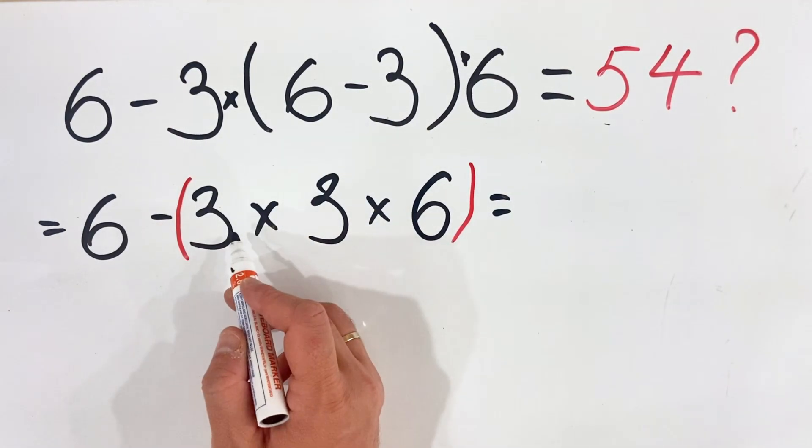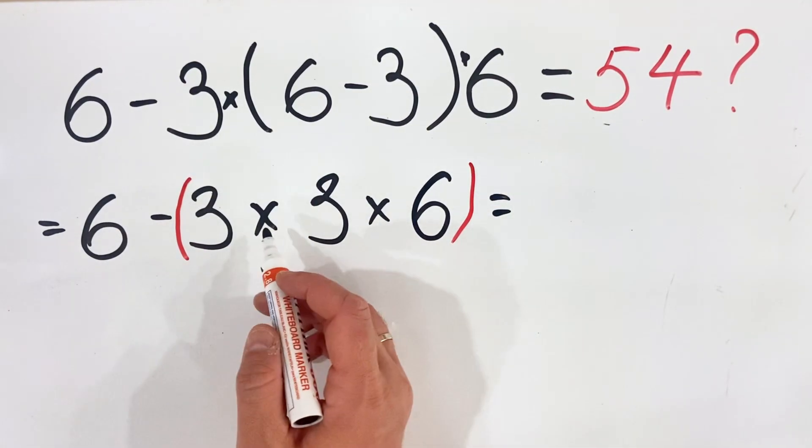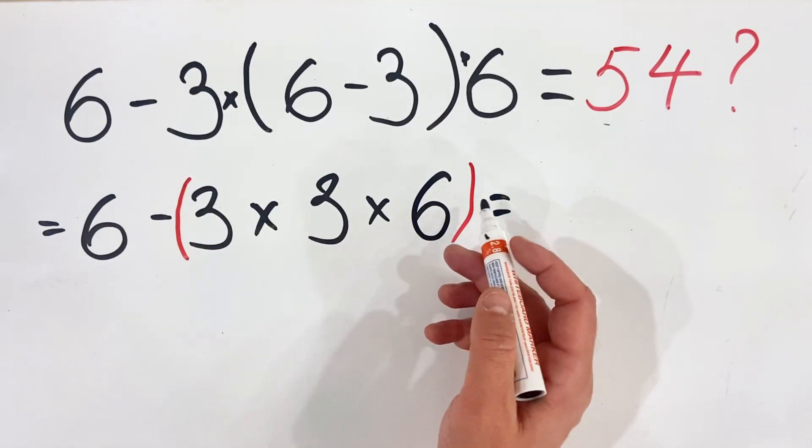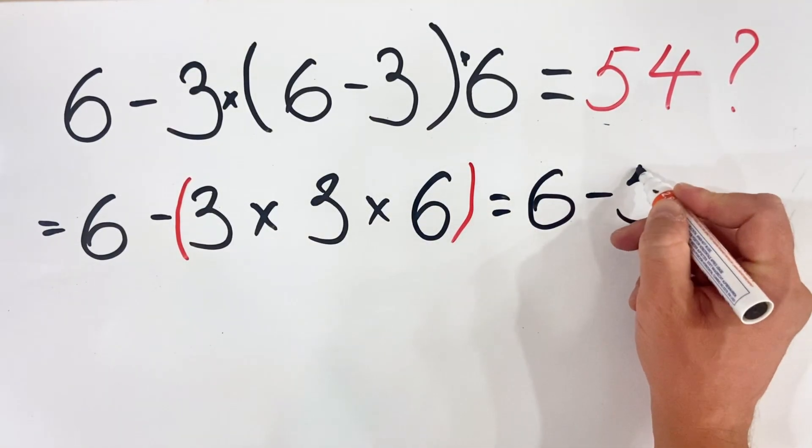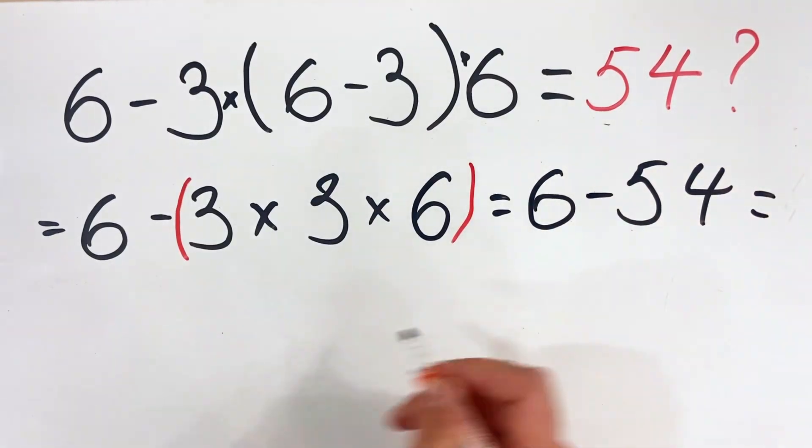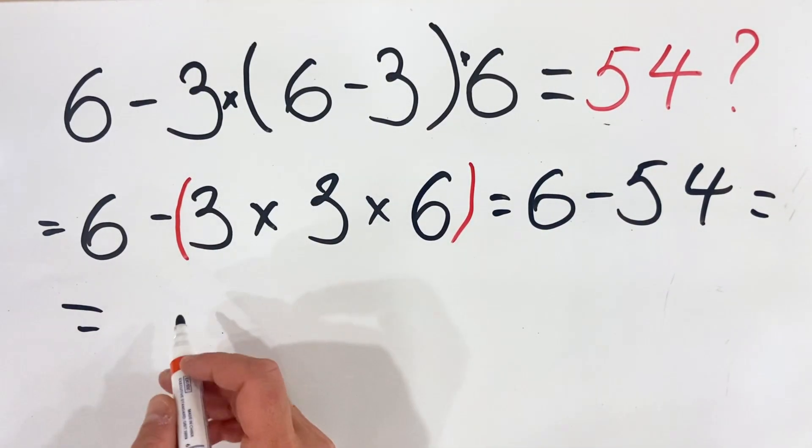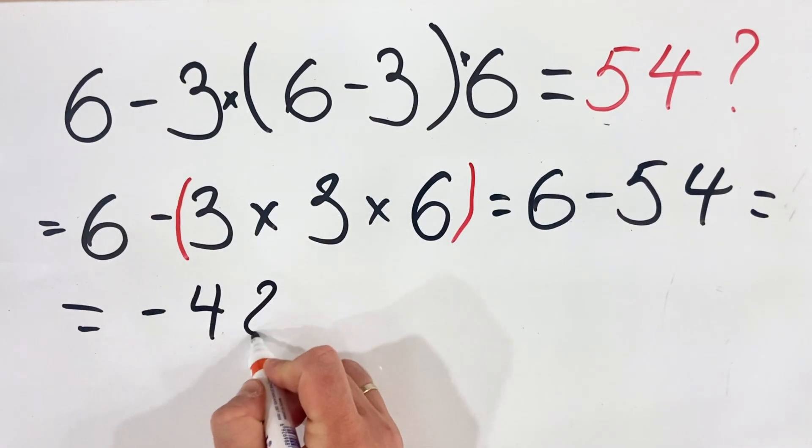In this case, 3 multiplied by 3 is 9, and 9 multiplied by 6 is 54, so we get 6 minus 54, and the answer is negative 48.